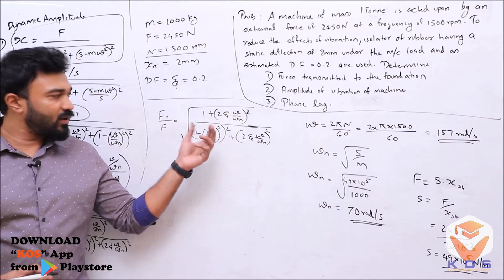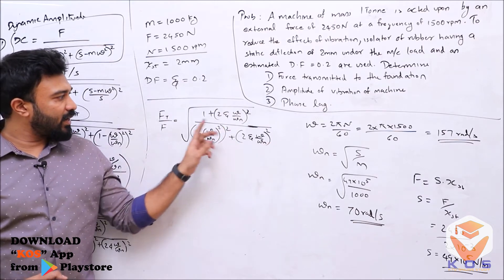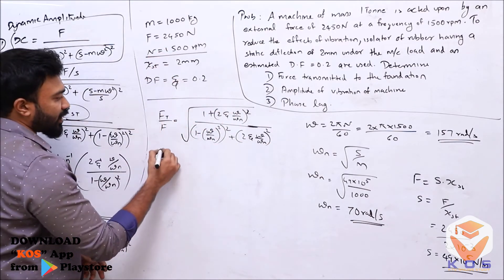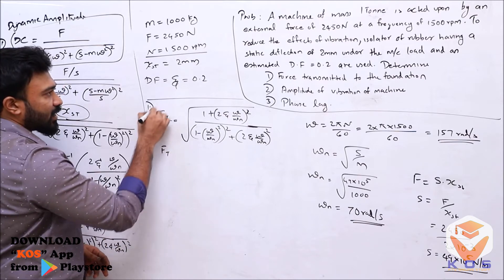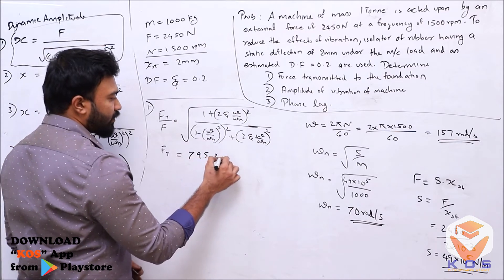Now substituting all values into this equation: zeta = 0.2, omega value, omega_n value, and F = 2450. So the force transmitted to the foundation Ft equals 795.3 N.